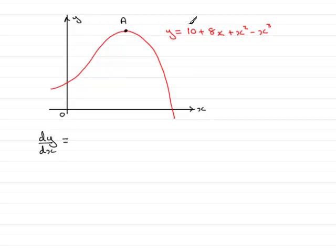So dy/dx, if we differentiate the first term that's going to be 0, differentiate 8x and we simply get 8, differentiate x squared it'll be 2x. And then lastly, differential of minus x cubed is going to be minus 3x squared.